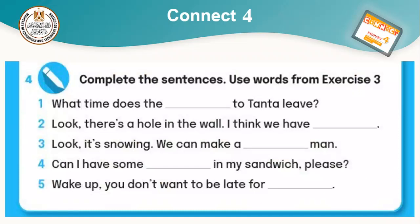Complete the sentences using words from exercise three. Number one: What time does the train to Tanta leave? Number two: Look, there is a hole in the wall — I think we have mice. Number three: Look, it's snowing — we can make a snowman, so number three is snow.